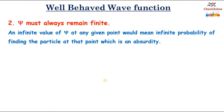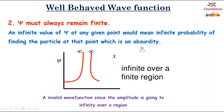The second condition is that ψ must always remain finite. An infinite value of ψ at any given point would mean infinite probability of finding the particle at that point, which is an absurdity. Here you can see that the two lines extend over to infinity, meaning the value of ψ extends to infinity.